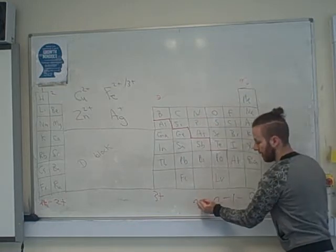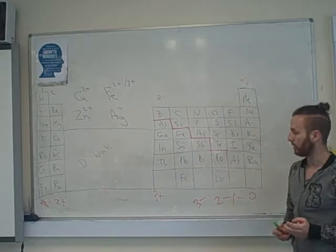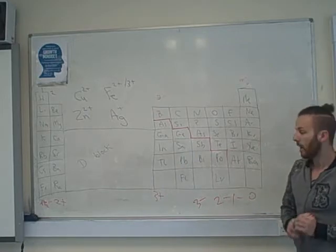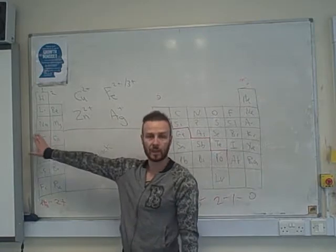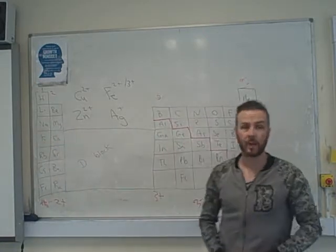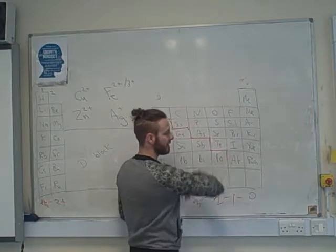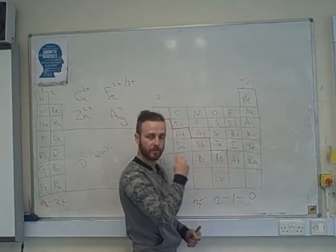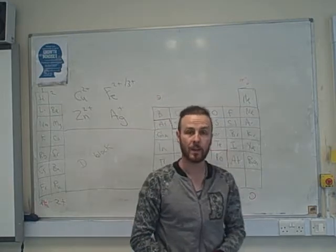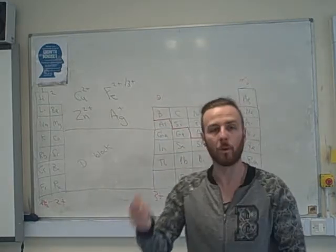Nitrogen, phosphorus, et cetera, three minus. And we'll stop there. So if you want to know what the charges of the metal are, start on the far left and it's one, two, three. If you want to know the charges of the non-metals, start on the right and it's zero, minus one, minus two, minus three. So that's how we can tell the charges of an element ion.